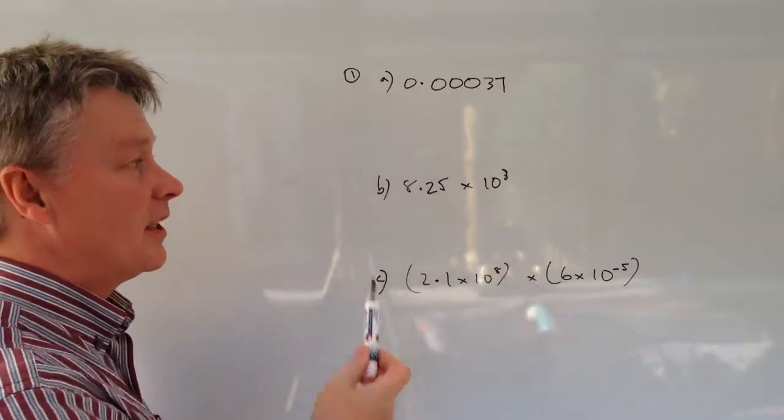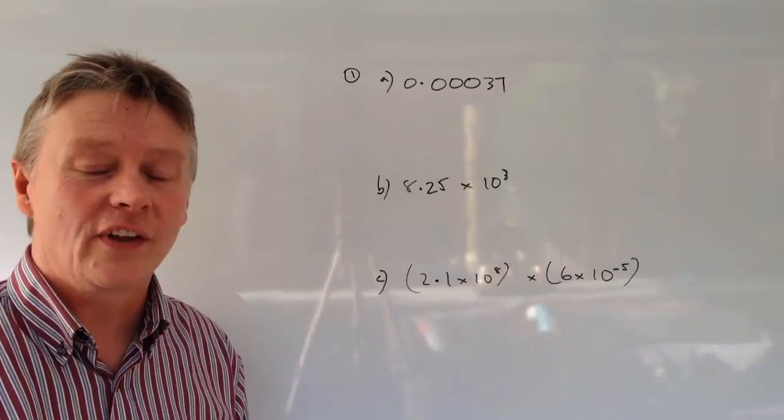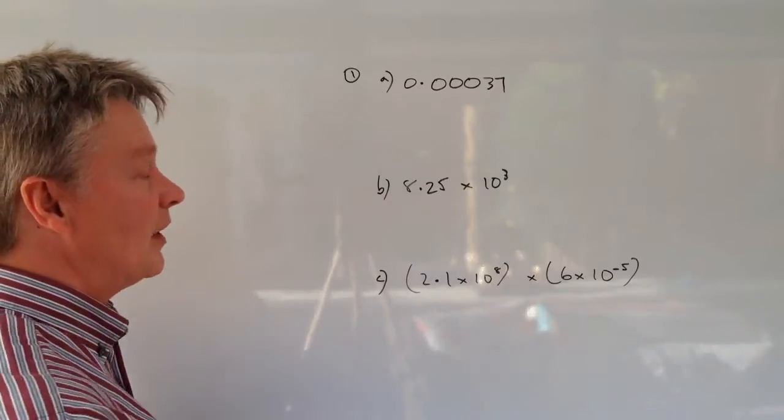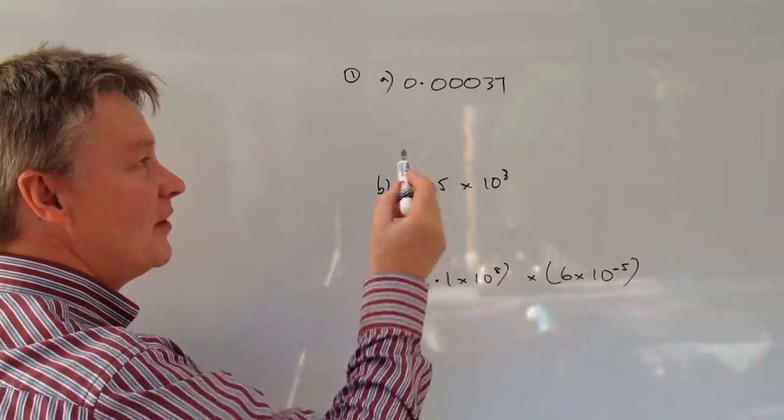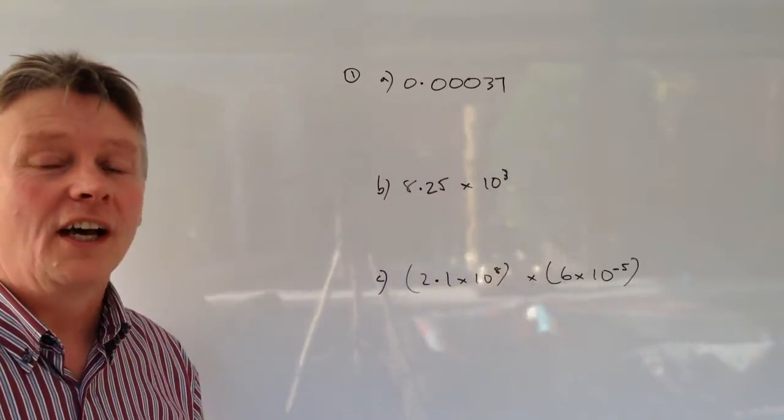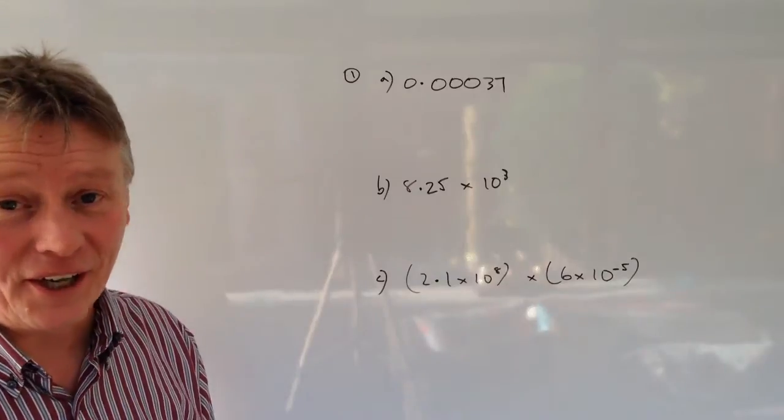This particular series of questions deals with standard form. Now what we're saying is in order to create this number in standard form we have to have the digits between 1 and 9.999 recurring.